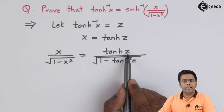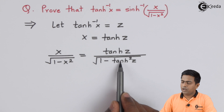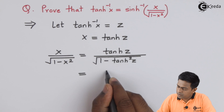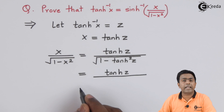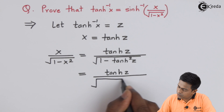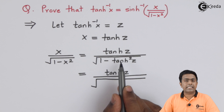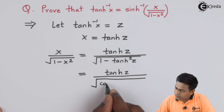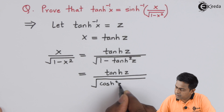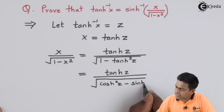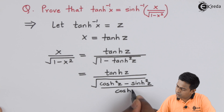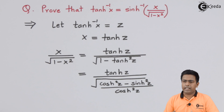We keep tanh(z) in the numerator and substitute tanh as sinh/cosh. So we get: tanh(z) / √(1 - sinh²(z)/cosh²(z)). Taking the LCM inside the square root gives us √((cosh²(z) - sinh²(z)) / cosh²(z)).